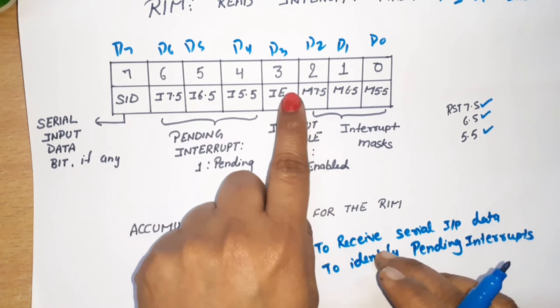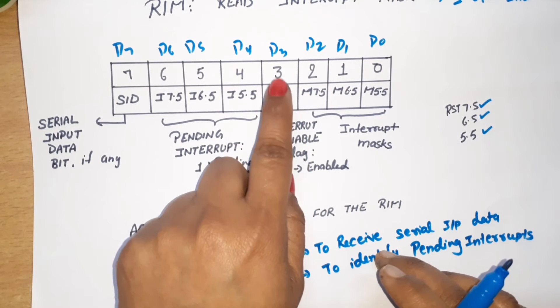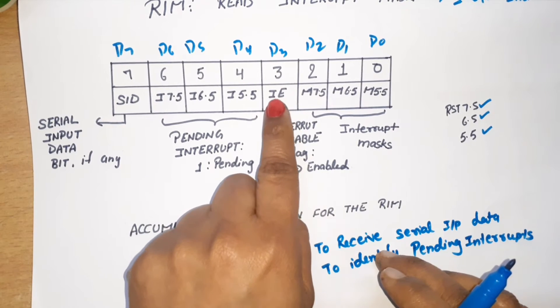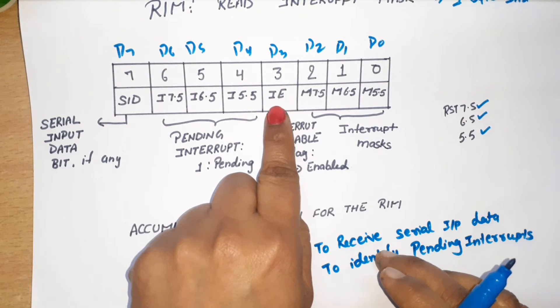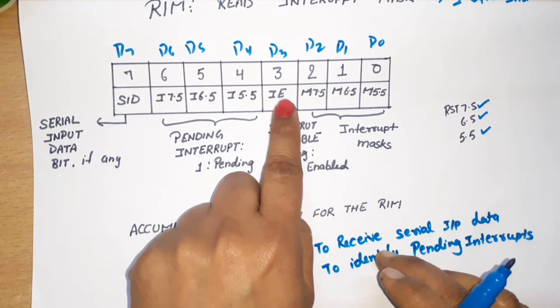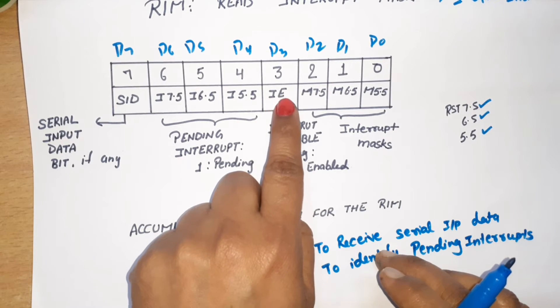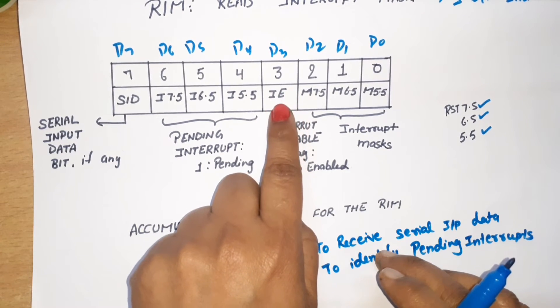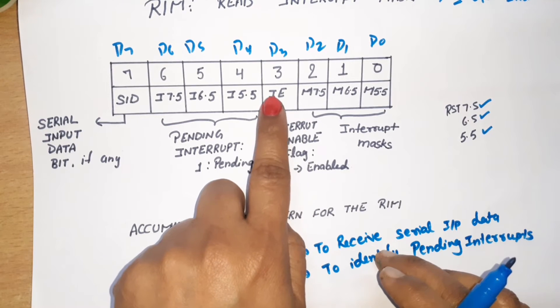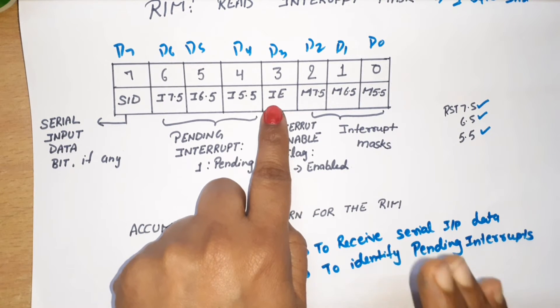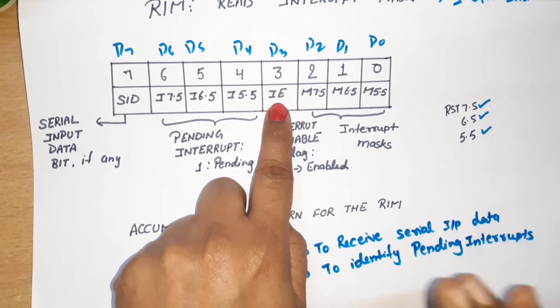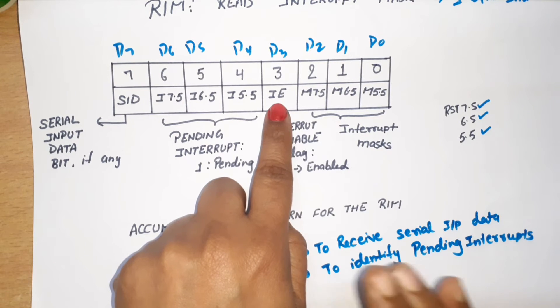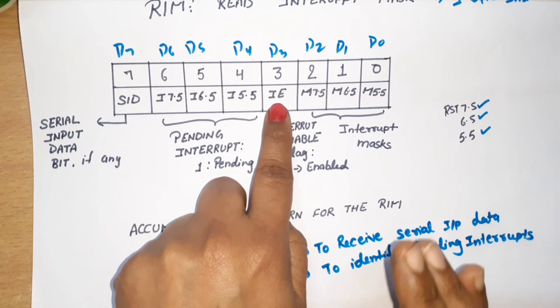Bit number D3, which is IE (Interrupt Enable), shows the interrupt enable flag status. If this value is equal to 1, it means interrupts are enabled. If this value is equal to 0, interrupts are not enabled.